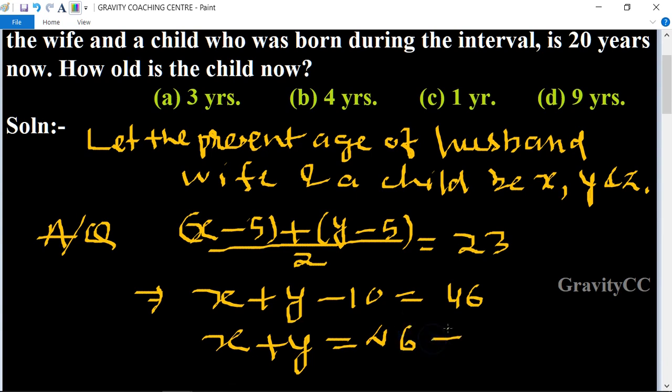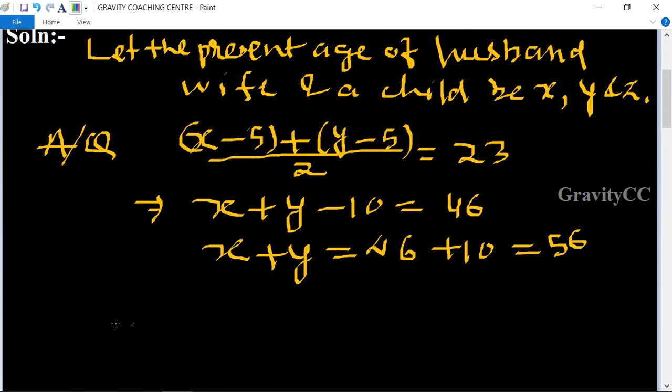x + y equals 56. And the average age of husband, wife, and child...